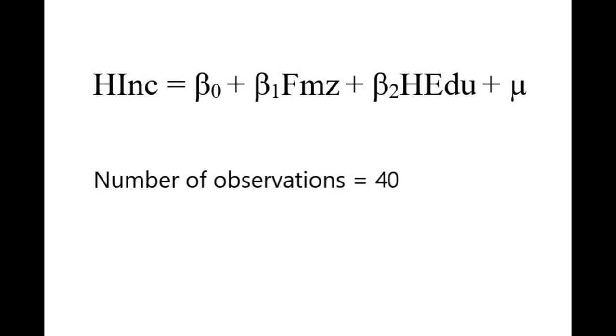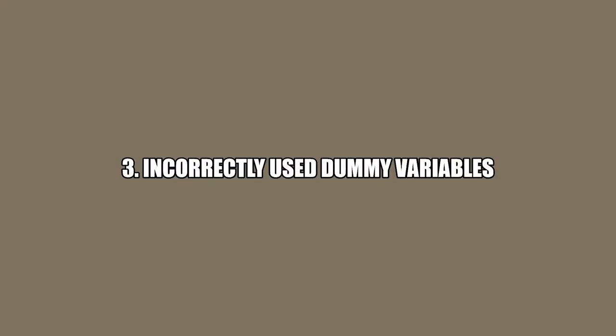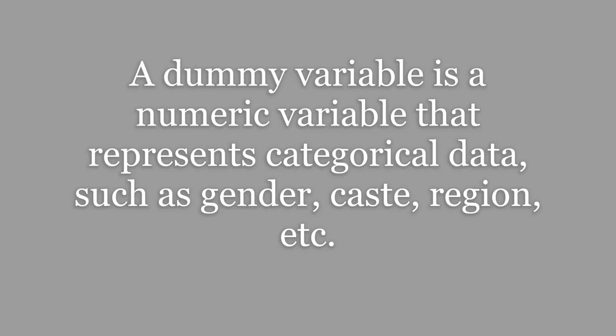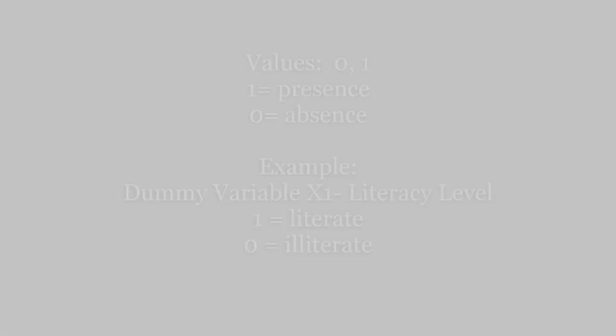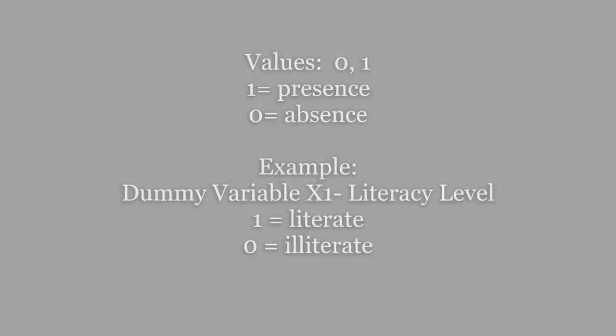The third reason as to why multicollinearity occurs is dummy variables may be incorrectly used. A dummy variable is a numeric variable that represents categorical data such as gender, caste, region, etc. Dummy variables can take on only two values, 0 and 1. 1 represents the presence of a qualitative attribute and 0 represents the absence.